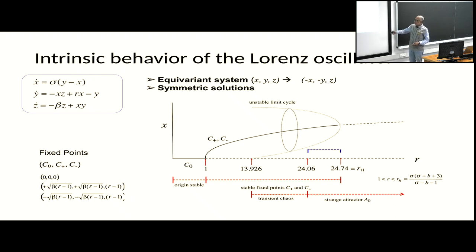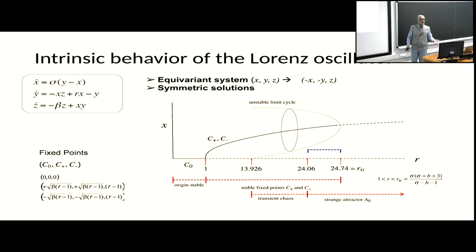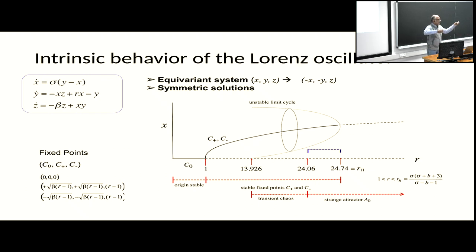I will consider the Stuart-Landau system a little later and show how that happens on the board. You have this fixed point stable up till R_H for Hopf, and then it becomes unstable. For this particular system, up till the value 24.06, a strange attractor is born at 24.06. For a very brief period, the strange attractor coexists with two fixed points — some initial conditions take you to the fixed point, some to the strange attractor.